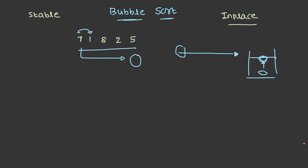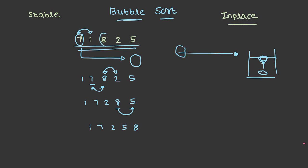Both elements are compared. 7 is greater than 1, so they are swapped and comparison moves forward. The comparison at the second position is over; now comparison moves to the third position. Both elements are compared and interchanged. Finally, comparison happens at the last place and both are interchanged. If we observe, 8 is the largest element in the array, and at the end of the first iteration, 8 has moved to its respective final position — just like a bubble floating to the top.